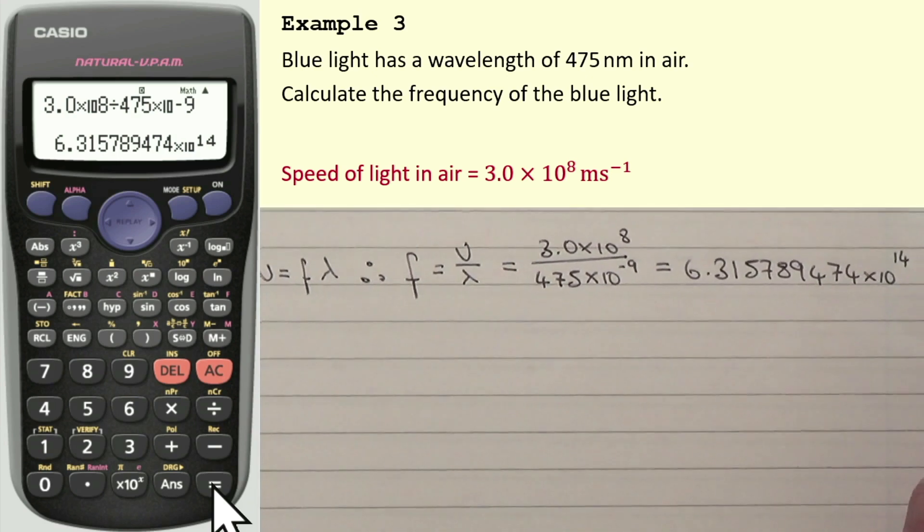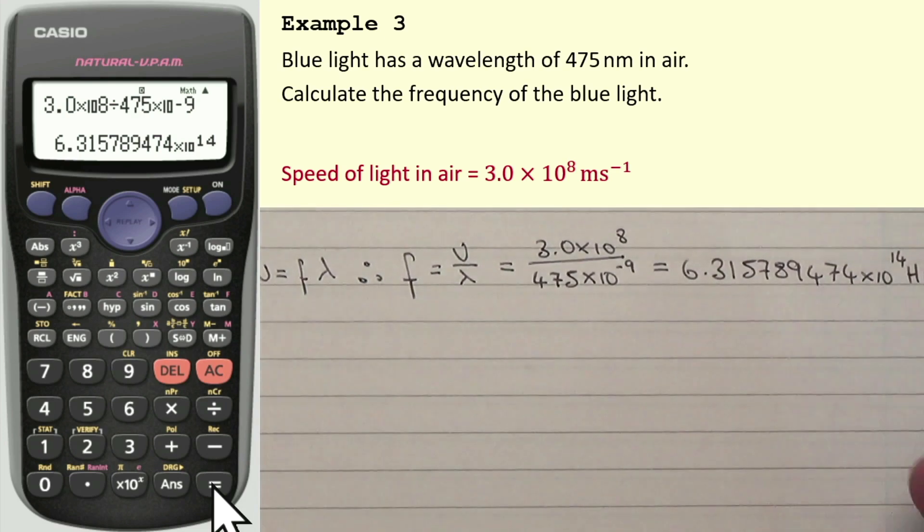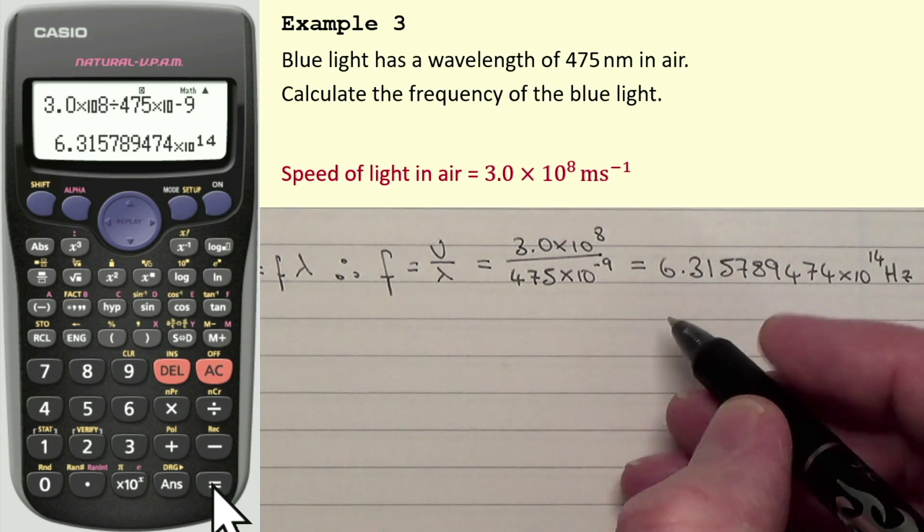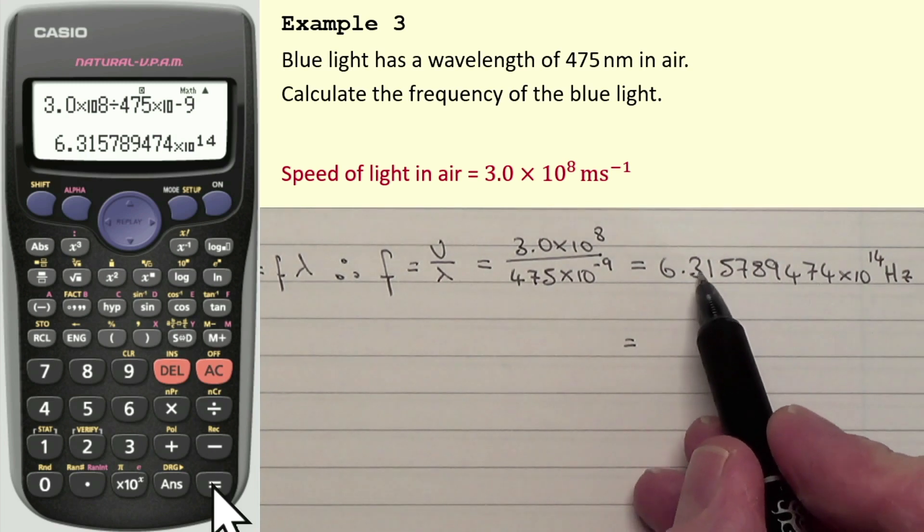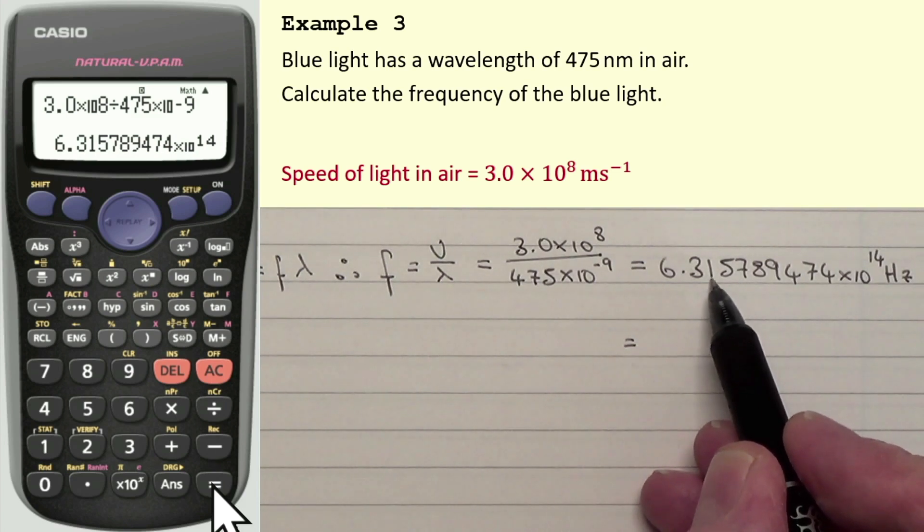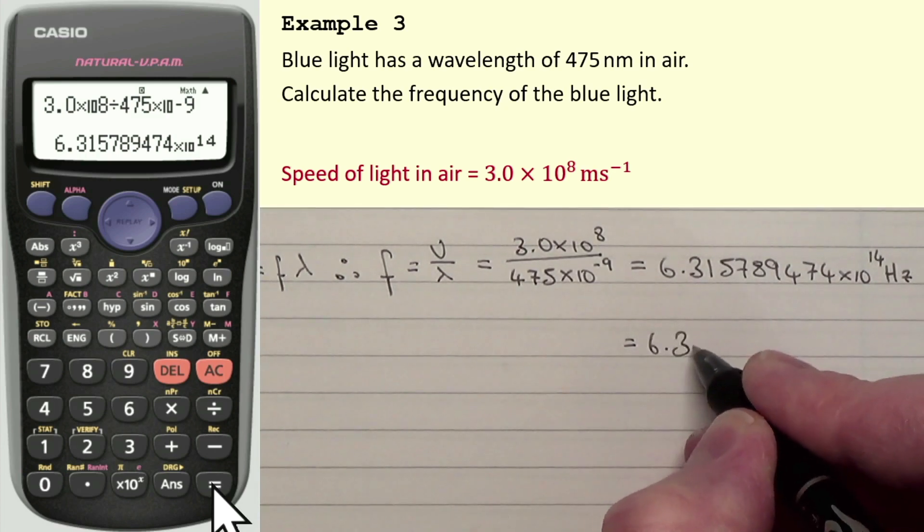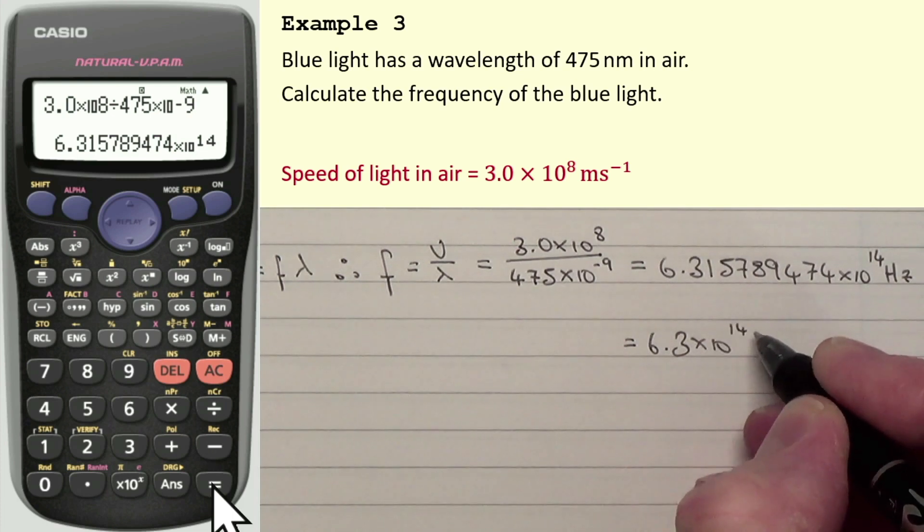Now, you could actually have just rounded this number up as I was writing it. The two numbers which we're actually using for this calculation are the wavelength, which is written to three significant figures, and we've got the speed written to two significant figures. And, my final answer should have the same number of figures as the number in the question with the least number of figures. In other words, two. So, that can also be written as 6.3. I'm not needing to round up this number, because the number after the three is a one. If it was five or more, I would need to round up this second figure. So, it's 6.3 times 10 to the power of 14 hertz.